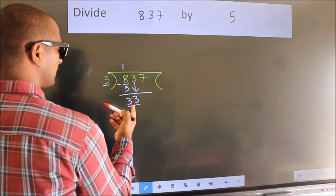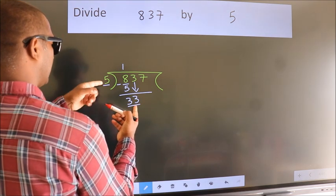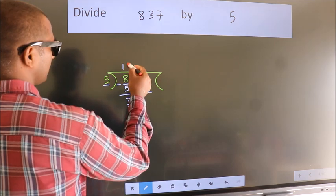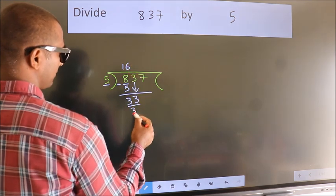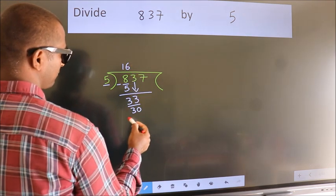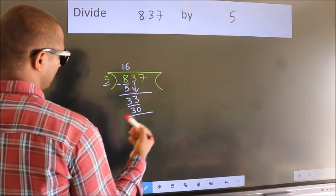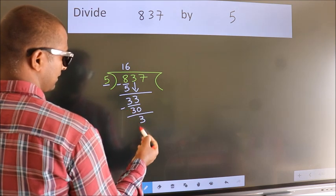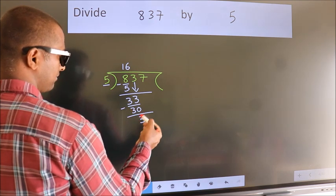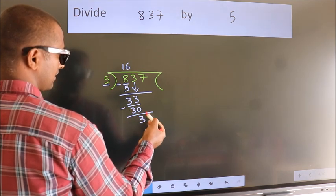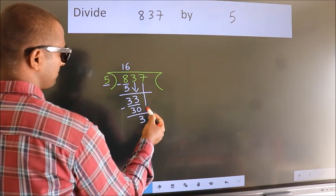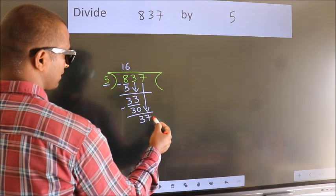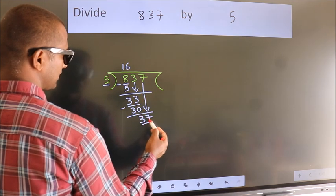A number close to 33 in the 5 table is 5 times 6, which is 30. Now we subtract — we get 3. After this, bring down the beside number. So 7 down, so 37.